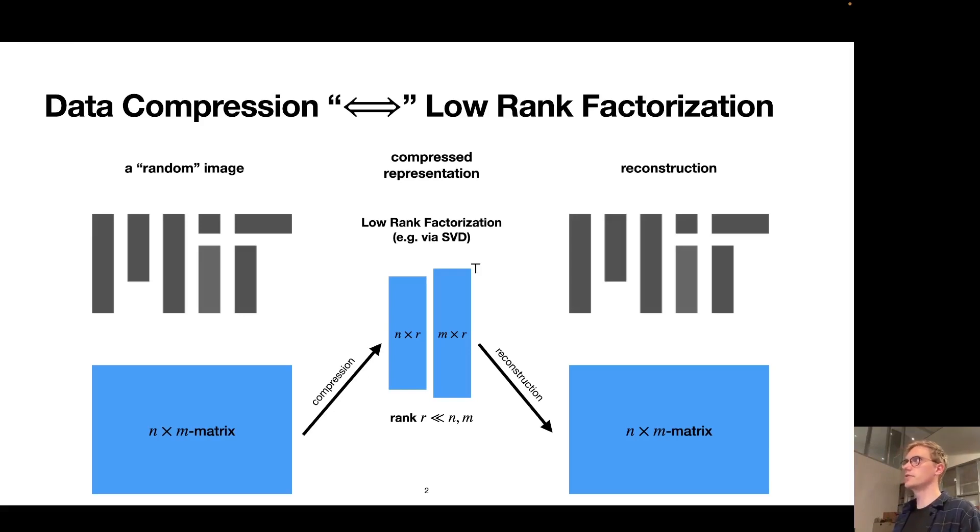But before I get into that, I would like to add some context to this talk by briefly reminding everyone that the notions of data compression and low-rank matrix factorizations in many cases go hand in hand. I believe that image compression is one of the archetypical data compression problems that showcases that quite nicely. Given such a grayscale image here, we can actually think of it as a big matrix where each matrix entry gives us the shade of gray of the corresponding pixel.